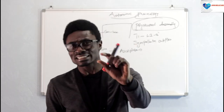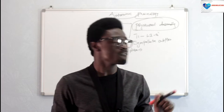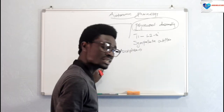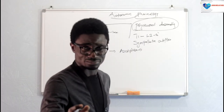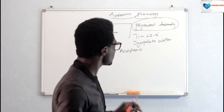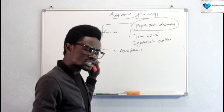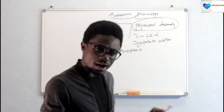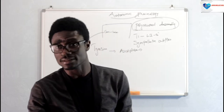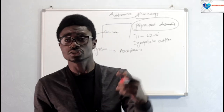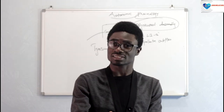When tyrosine enters the cytoplasm of the nerve terminals, it meets an enzyme called tyrosine hydroxylase. This tyrosine hydroxylase converts tyrosine into DOPA. This DOPA is then converted into dopamine by dopa decarboxylase.